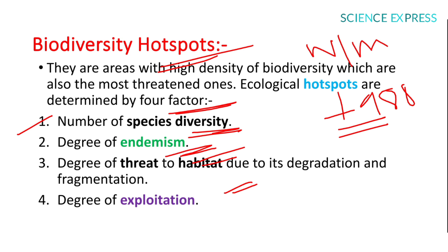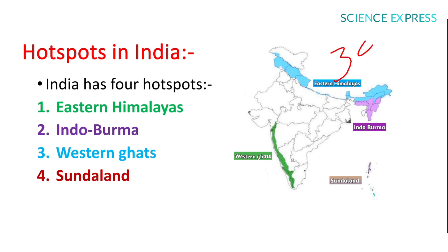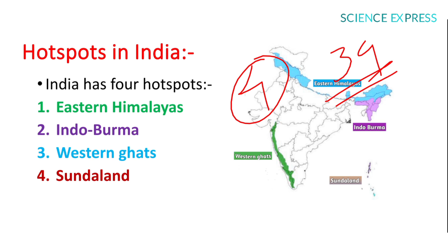The remaining two factors are: degree of threat to habitat due to its degradation and fragmentation, and degree of exploitation. Worldwide, 34 hotspots are present, but India has 4. These are the Eastern Himalayas — spread along northern and north-western high mountain ranges with snow-covered peaks — and Indo-Burma, extending from Bhutan to Myanmar covering most of north-east, rich in endemic species.